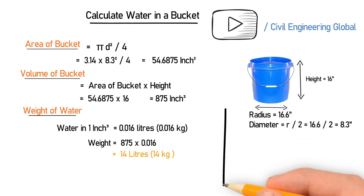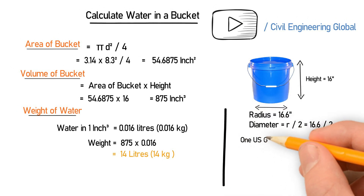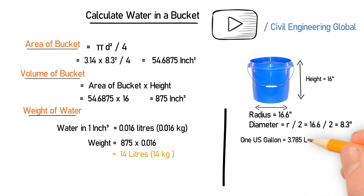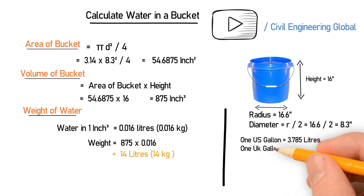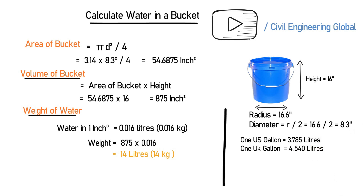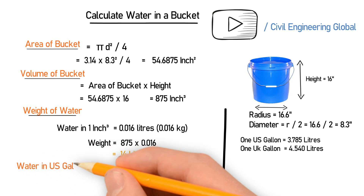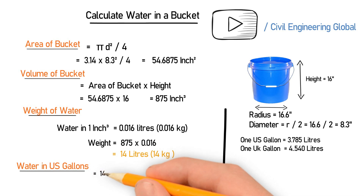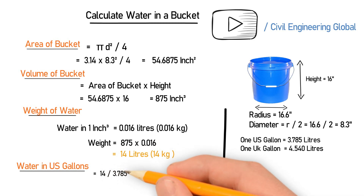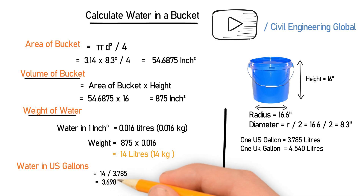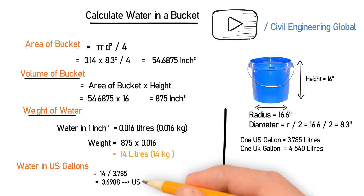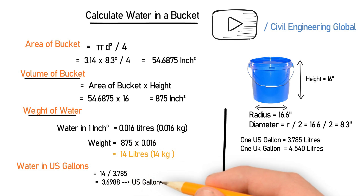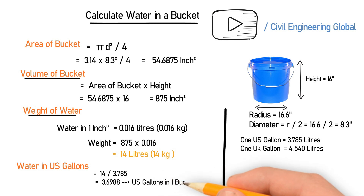This is the weight of the water in a bucket — 14 liters or 14 kilograms. If you want to convert this into US gallons, one US gallon is equal to 3.785 liters, and one UK gallon is equal to 4.540 liters. To convert to US gallons, we take 14 and divide it by 3.785, which gives us 3.6988 US gallons.